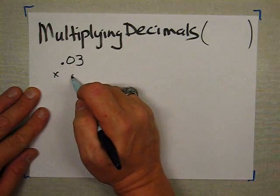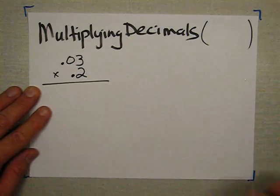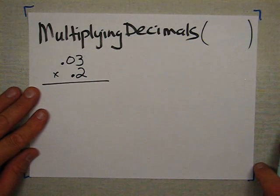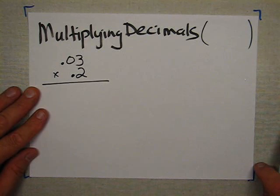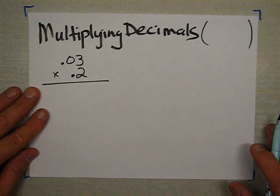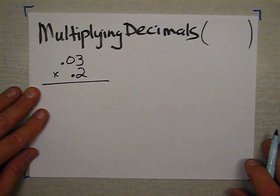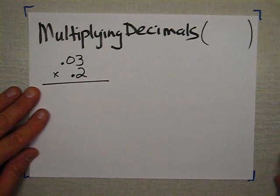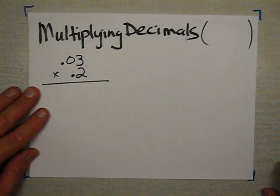.03 times .2 — 3 hundredths times 2 tenths. Now, did you notice that I did something differently here from what I did when we were adding and subtracting? Whenever we were adding and subtracting, we always had to line up the decimal points — but I did not do that this time. Whenever you are multiplying decimals, you do not need to line up the decimal points. Sometimes they coincidentally line up, but it's just a coincidence. Decimal points can just fall where they may.